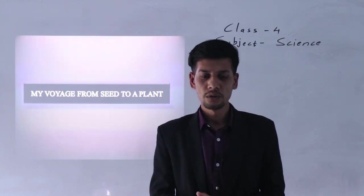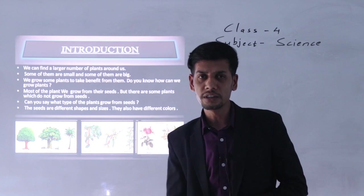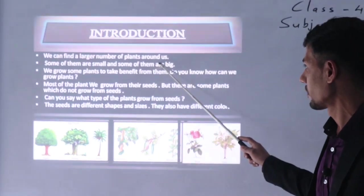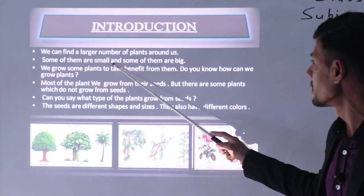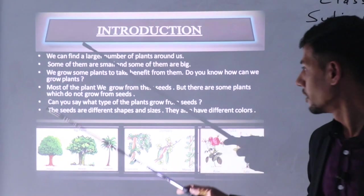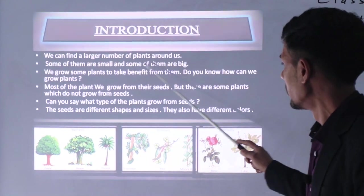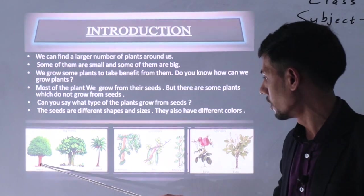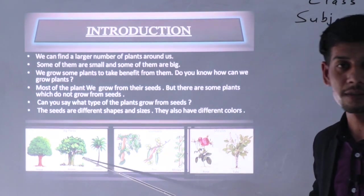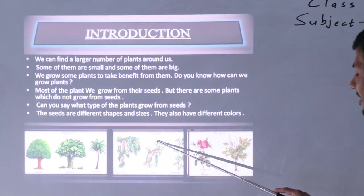Let us start our today's topic. Our topic is introduction first. We can find a larger number of plants around us. Some of them are small and some of them are big. In our nature we can find different types of plants - their size varies. Some plants are in a small size and some are in big size also. You can look at this figure - there are people of our country, the small tree, big tree, coconut tree. These are big plants, so their size is big. Similarly, you can see some shrubs and climbers. They are small in size.